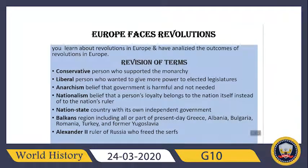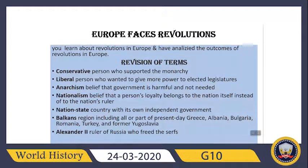The next lesson is 'Europe Faces Revolutions.' In this lesson you learned about revolutions in Europe and analyzed the outcomes of those revolutions. A few terms: Conservative — in history, whenever you read this word, it means a person who supported the monarchy. Liberal — a person who wanted to give more power to elected legislatures, like people of Congress.